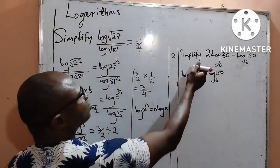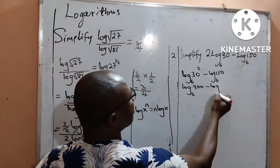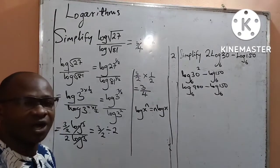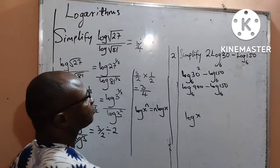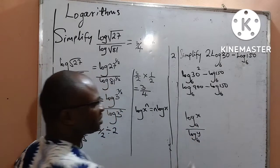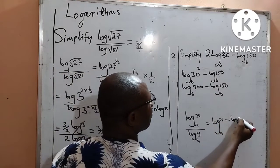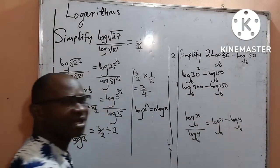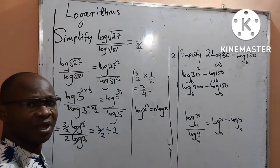Moving forward, I want to work out this power, which means 30 raised to power 2 gives me 900. So I now have log base 6 of 900, minus log base 6 of 150. By this subtraction, I will apply the division law of logarithms, which states: if you are given log base 6 of x minus log base 6 of y, that is equal to log base 6 of x divided by y. This is a law in logarithms, and I am going to apply it here — what I see on the right-hand side matches the question.